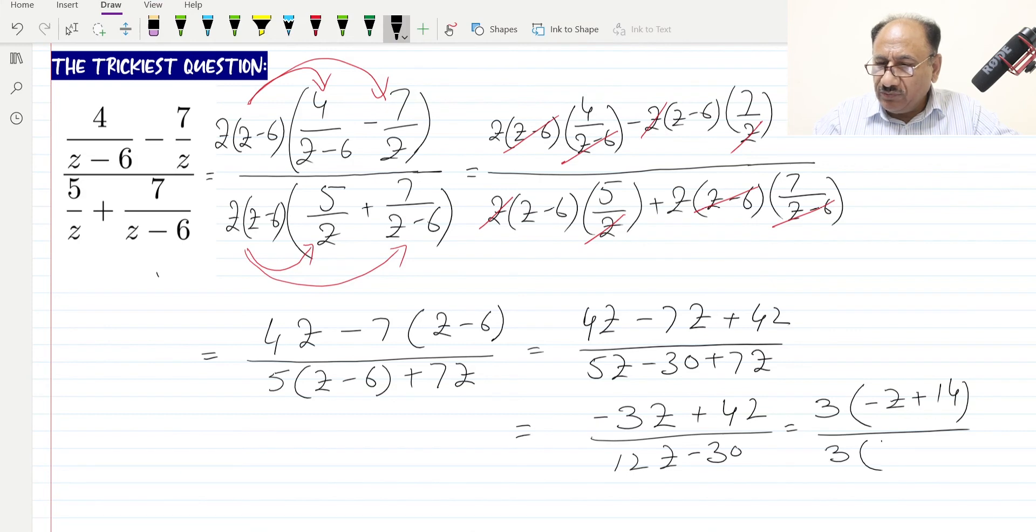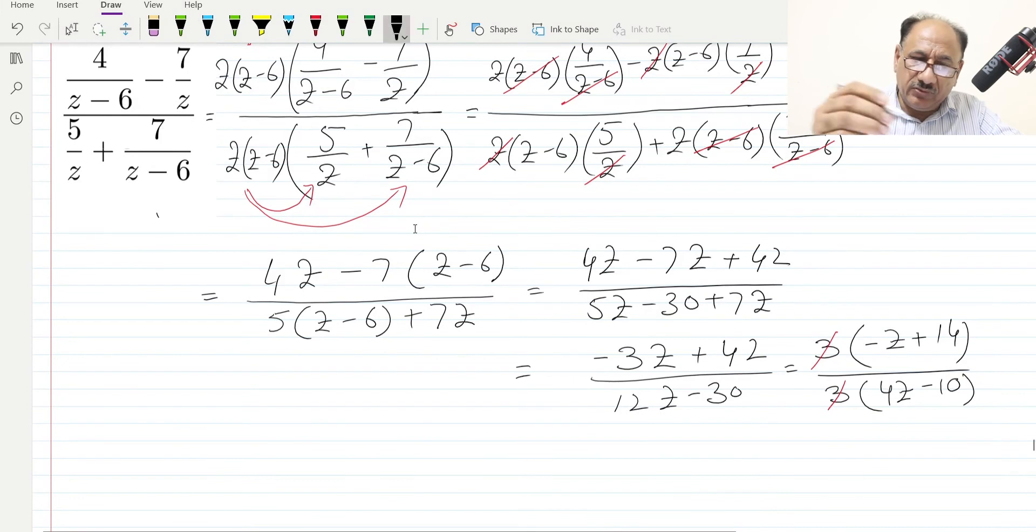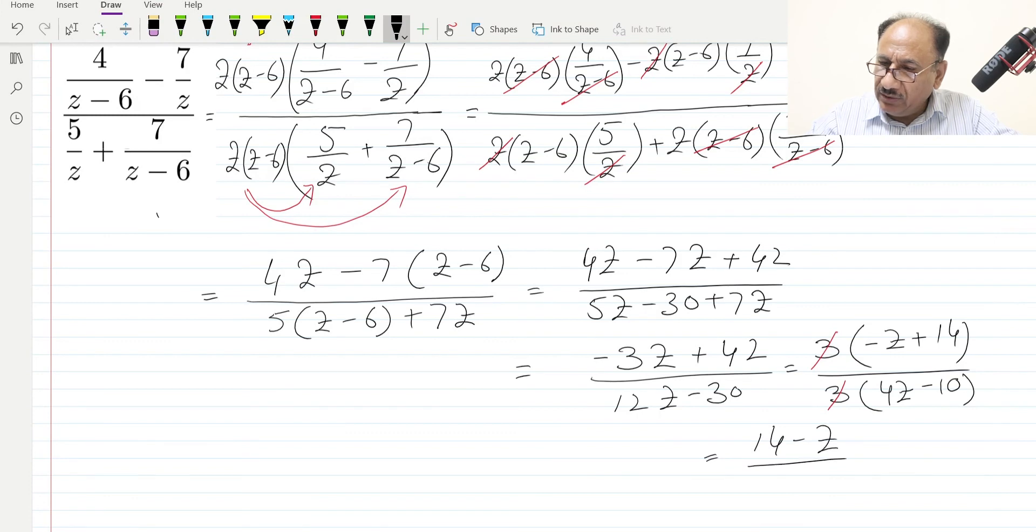We can cancel 3 with 3, and the final answer we can write is 14 minus z, divided by 4z minus 10. This is our final answer for this question.